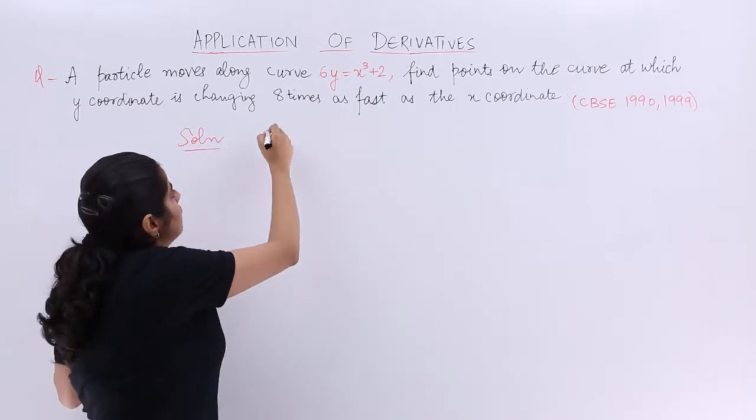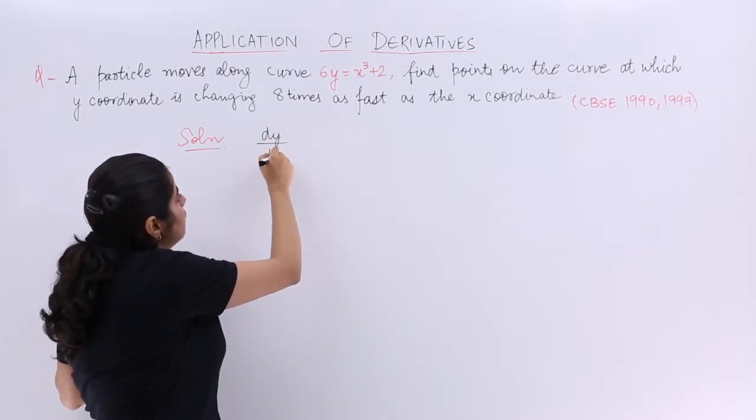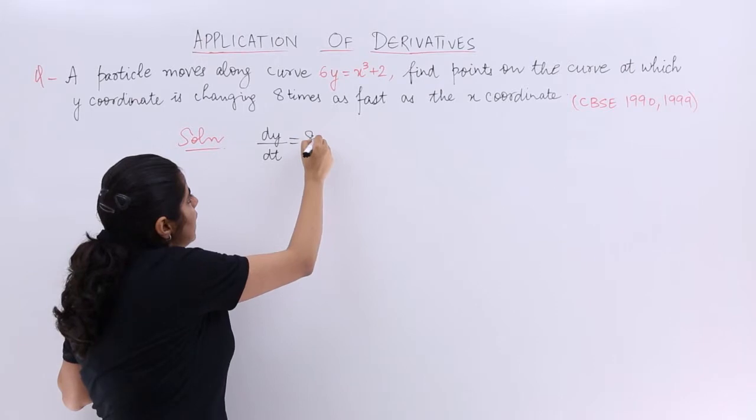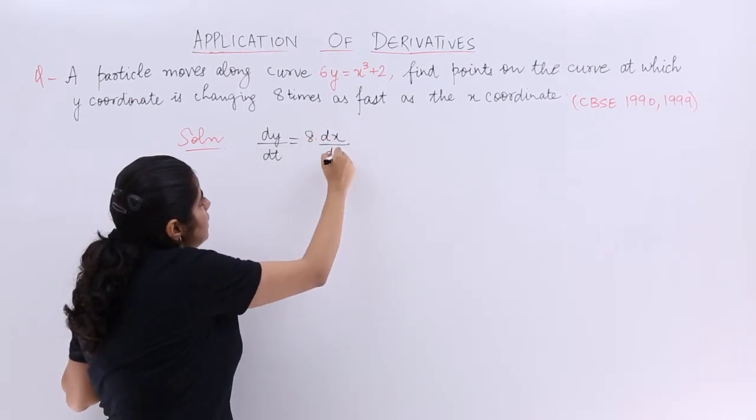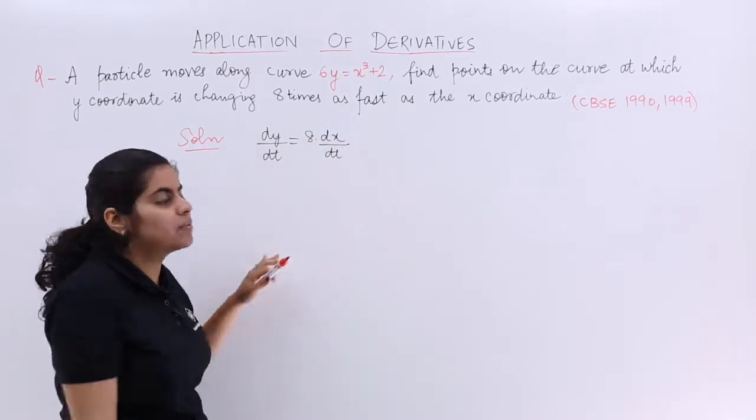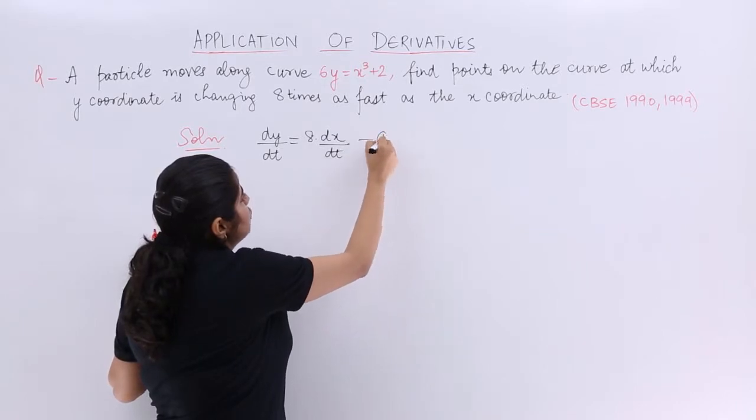It says the change in the y coordinate is 8 times as fast as the x coordinate. Doesn't it mean like that? So dy/dt equals 8 dx/dt. This is equation number 1.